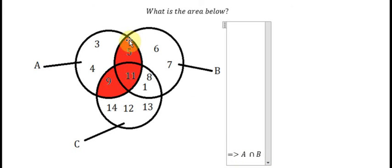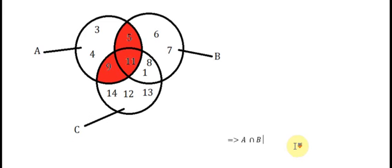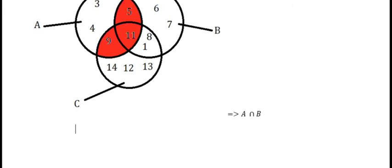In the next area between A and C, we have the overlap again. That's regions 9 and 11, so we have A intersection C here.